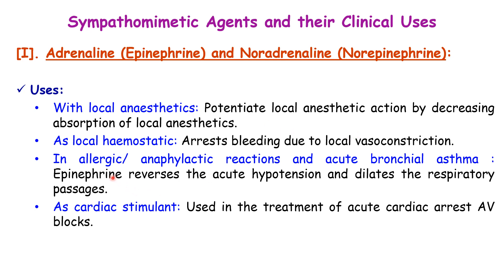Adrenaline and noradrenaline are mainly used with local anesthetics, potentiating local anesthetic action by decreasing absorption of the local anesthetic. They also act as local hemostatics, arresting bleeding due to their local vasoconstrictive effect. They are important in allergic and anaphylactic reactions and acute bronchial asthma. Epinephrine is the drug of choice for anaphylactic reactions — it reverses acute hypotension and dilates the respiratory passages. It also reverses bronchoconstriction in bronchial asthma. These drugs are also used as cardiac stimulants in acute cardiac arrest and AV block.